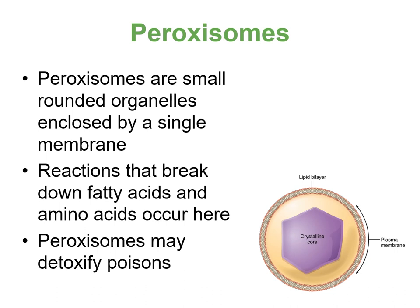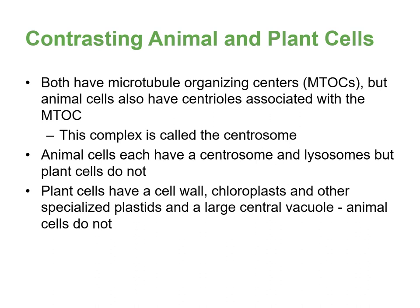Peroxisomes are small rounded organelles enclosed by a single membrane. They break down fatty acids and amino acids, and can potentially detoxify poisons. These are not found in plant cells — they're in animals. Comparing animal and plant cells: both are eukaryotic, but they differ. Both have a microtubule organizing center (MTOC), but animal cells also have centrioles associated with it, called a centrosome. Animal cells also have lysosomes, but plant cells do not.